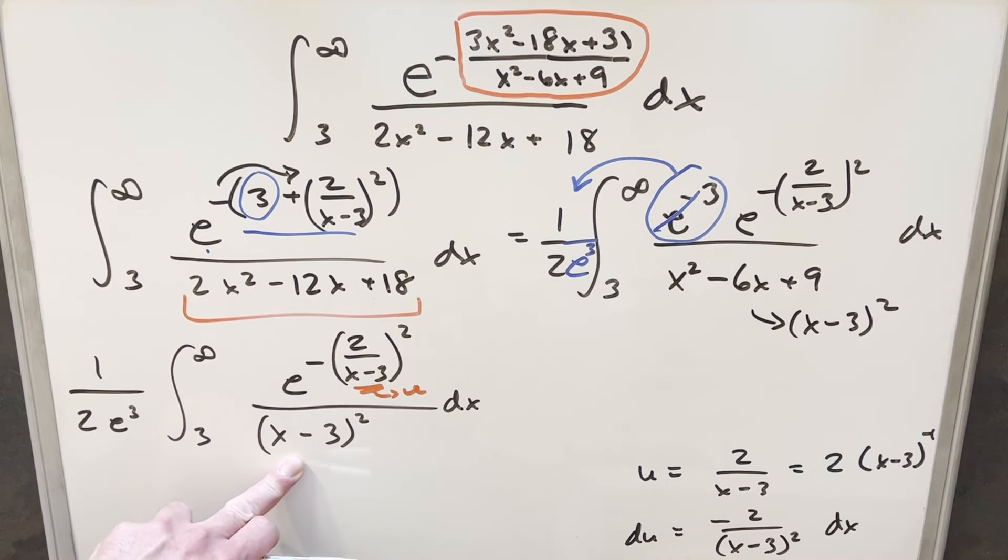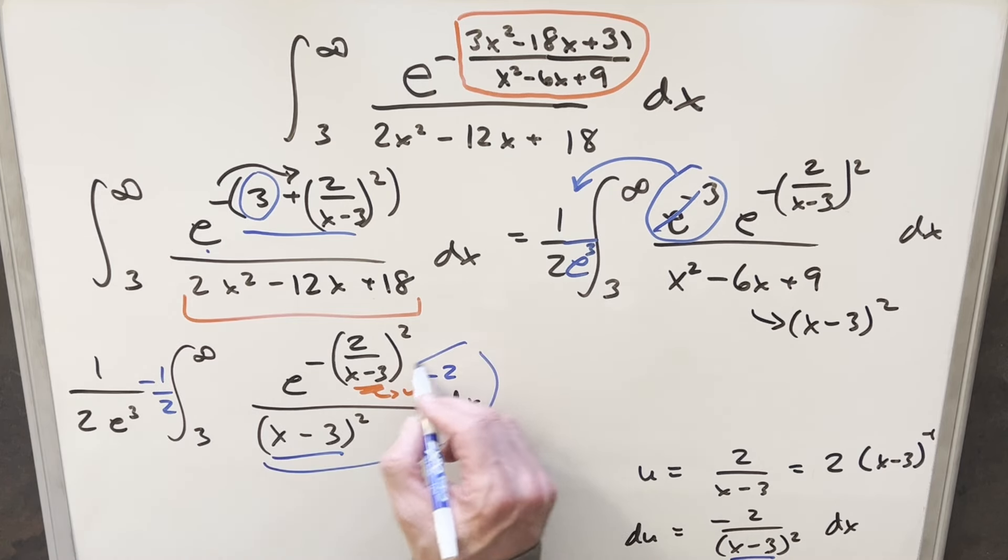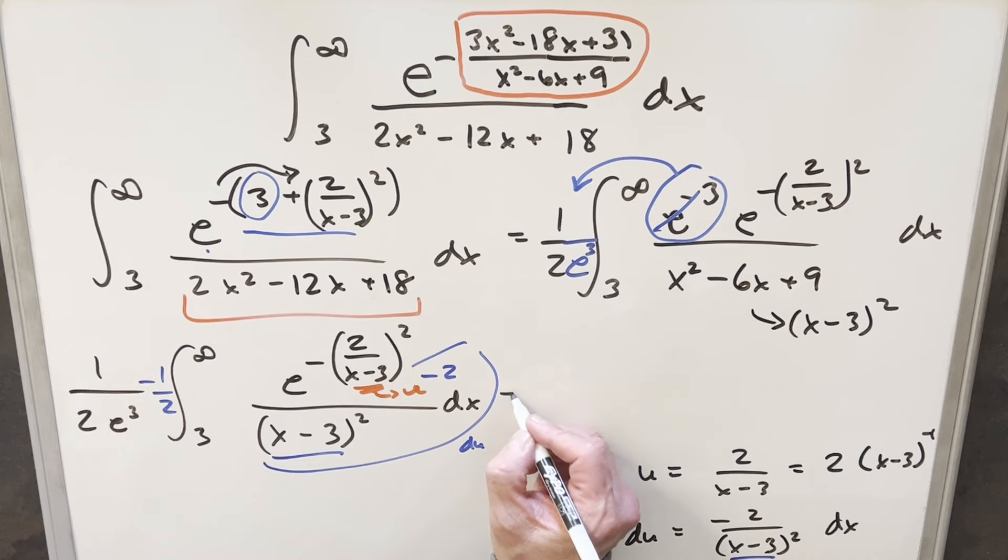And then this is almost perfectly set up for our U substitution, because this X minus three squared, we have this here, we just need to create this minus two. So what I'll do is I'll multiply in a minus two here, but I don't want to change it. So I'll multiply by minus a half in front here. And then now we have exactly our DU, all this stuff over here to the right. So we'll just go ahead with this substitution.